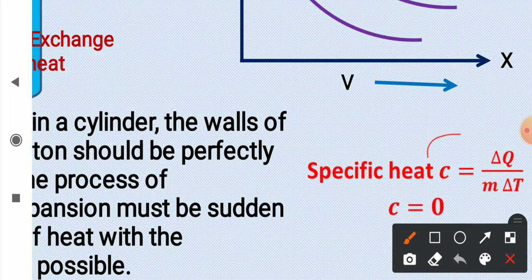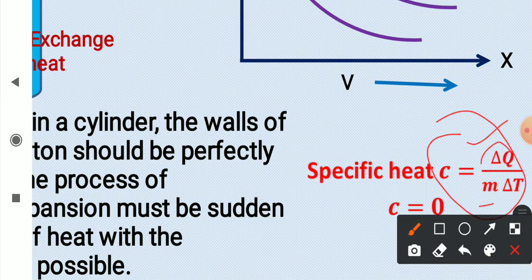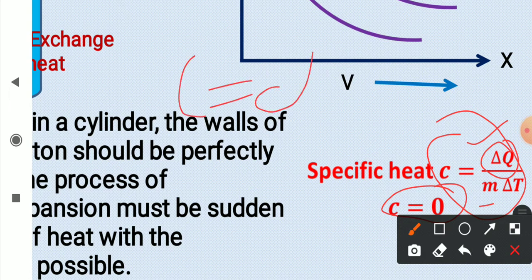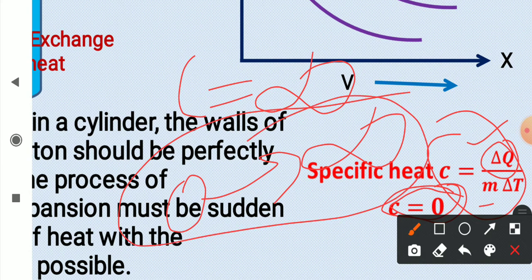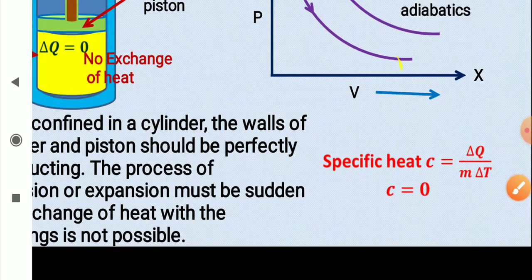The specific heat C = ΔQ/(m·ΔT), and since ΔQ = 0 in an adiabatic process, the specific heat is zero. So in an isothermal process C is infinite, and in an adiabatic process C is zero — meaning specific heat of a gas can range from zero to infinity, and can even be negative.